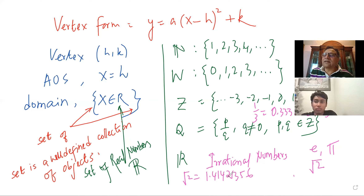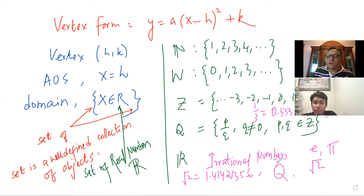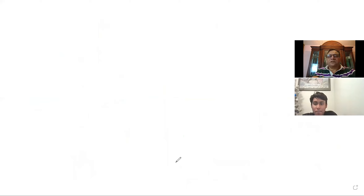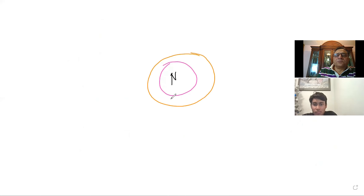The repeating decimals, which are non-terminating, are rational numbers because they can be written as 1 over 3, as I've shown you. However, square root of 2, which is non-terminating and non-repeating, cannot be written in the form of P over Q. Therefore, it's an irrational number. Similarly, pi, e, and so many other numbers. These are all irrational numbers. We note irrational numbers are given by Q-bar, or complement of Q — not rational. You get the idea?